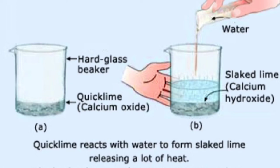We can see that when quicklime reacts with water, the temperature rises and the mixture becomes warm. Calcium oxide, or quicklime, is also known as limestone in common language and is used for whitewashing.